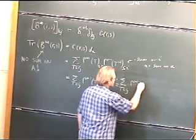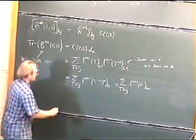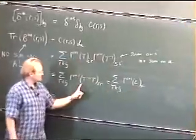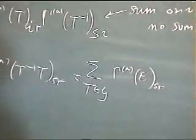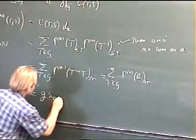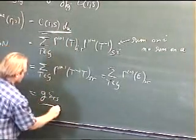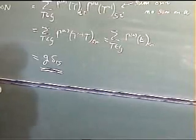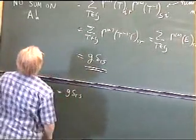This is a sum over T in G of the identity, S, R. Now this sum over T in G — nothing depends on T anymore, the T's have disappeared. So we're just going to get a one for each time that we sum. So we're going to get G, the order of the group, and we've got the identity matrix delta R, S.